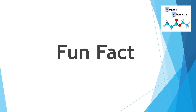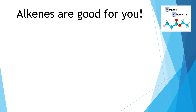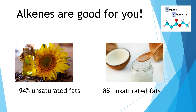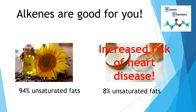Did you know that alkenes are good for you — if we're looking at oils and fats? Medical scientists have found an interesting correlation between fats that have lots of unsaturated bonds. Sunflower oil has 94% of its molecules with a double bond — they are unsaturated. Whereas coconut oil has only 8% unsaturated fats. Medical research has shown that saturated fats like coconut oil or those found in red meats increase the risk of heart disease. Therefore, unsaturated oils like sunflower oil are healthier for you.